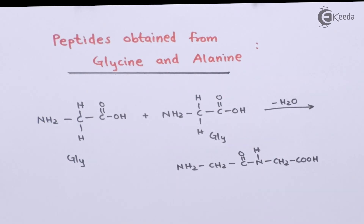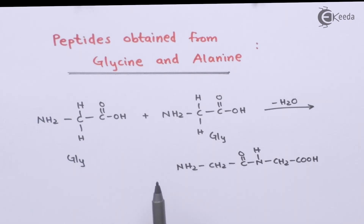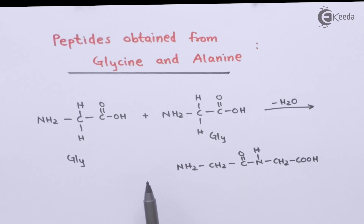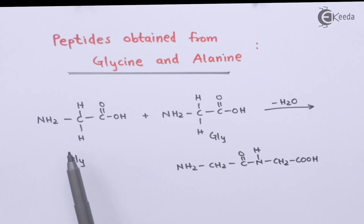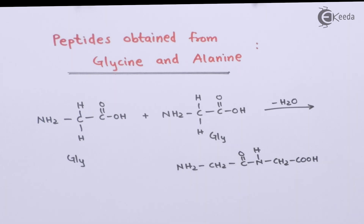The dipeptide obtained from glycine and glycine will be quite different from the dipeptide we could obtain from glycine and alanine, or from the dipeptide obtained from alanine and alanine. So this was the reaction of glycine with glycine to obtain a dipeptide.